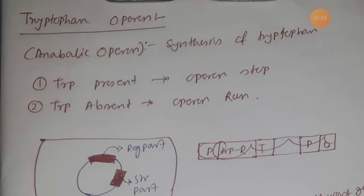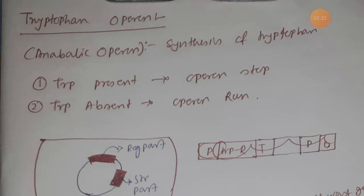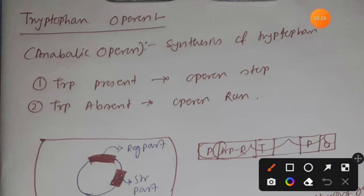In case of tryptophan operon the concept is the same. When tryptophan is present in the cell, the cell will not start its tryptophan operon because it does not need to — tryptophan is already present and it can easily take and use it for its own purpose. Why would it need to produce tryptophan by itself? Why would bacteria waste its energy?